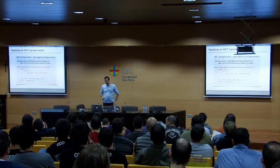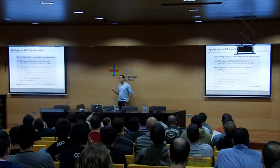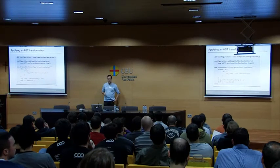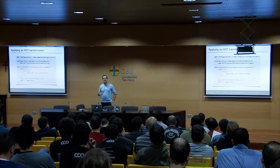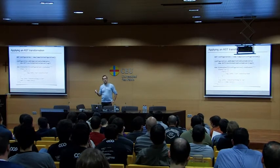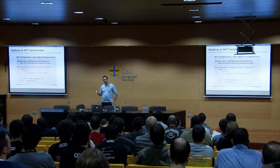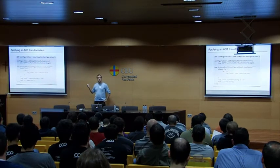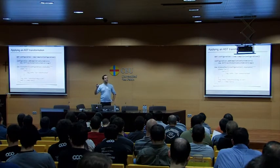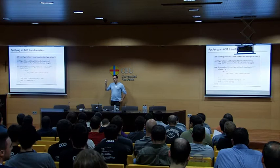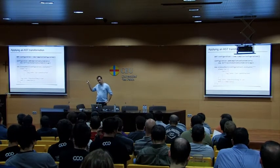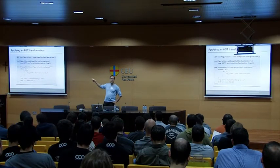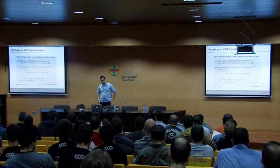With the ASTTransformationCustomizer you can inject loggers and transforms, including local transformations. For example, recalling the @Log transform: instead of annotating each class manually, I can automatically inject @Log so that it's applied to the Car class and also to the script class. You get two loggers — one for the Car and one for your script — without needing the annotation in the source.